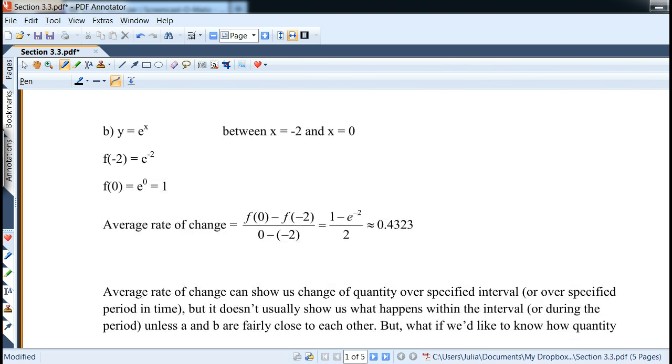So average rate of change can show us how the quantity is increasing or decreasing over specified interval. But just like average speed, for example, if it's 60 miles an hour, doesn't mean you're going 60 miles an hour the whole time, it just means that it was average speed. Now you could be slowing down or speeding up along the way. So it doesn't quite show us how fast we're going right now, which would be the instantaneous rate of change. And it doesn't really show us the dips, for example, if they can happen or sudden increases and so on. So it only shows us the average, which is kind of the downside of it.